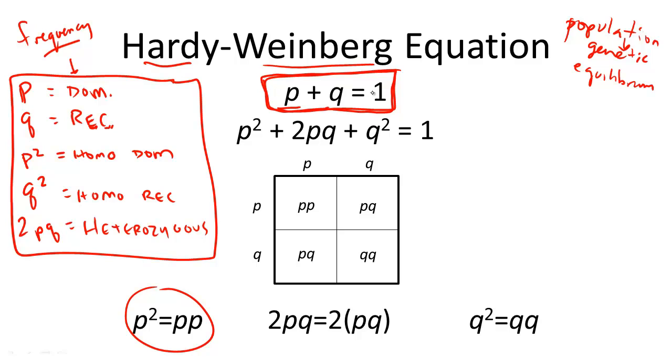They total up to equal the total amount of alleles that are possible in a population. Mathematically, if that's true, then also this second equation here is true. We know this by putting these possible gene frequencies into this famous Punnett square.